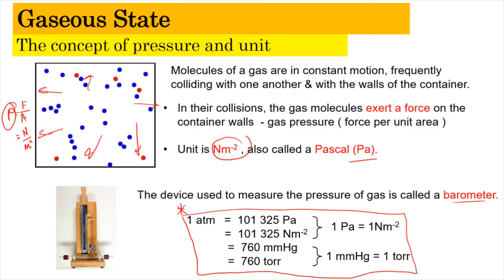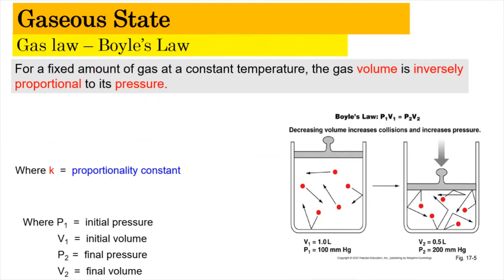According to Boyle's Law, for a fixed amount of gas at a constant temperature, the volume is inversely proportional to its pressure. When the volume decreases, the pressure gets higher, because the space for molecules to move around becomes limited and they collide with the walls more frequently. As volume decreases from 1 liter to 0.5 or 0.1 liter, the pressure increases.